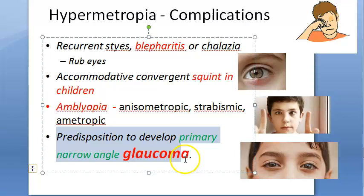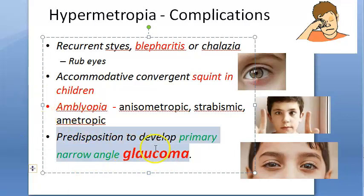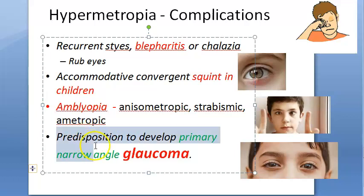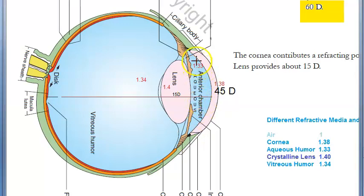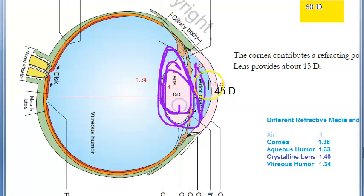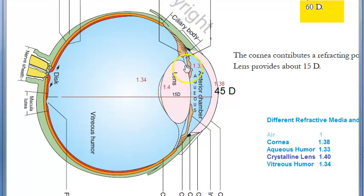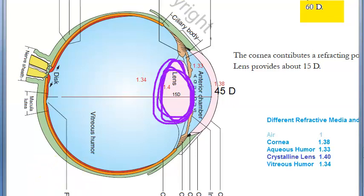Hypermetropic patients are predisposed to primary narrow-angle glaucoma because they have a shallow anterior chamber. With age, the lens grows bigger, further crowding the anterior chamber and raising intraocular pressure, leading to optic nerve damage. In elderly hypermetropic patients, you should be very careful while giving mydriatics.